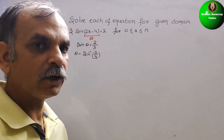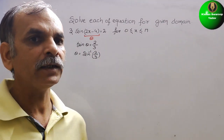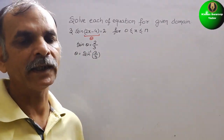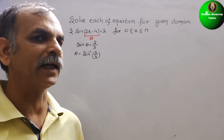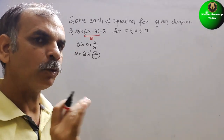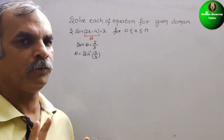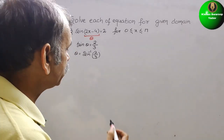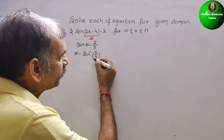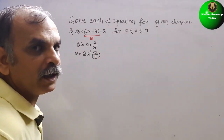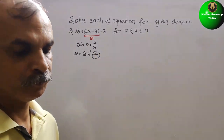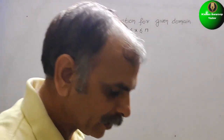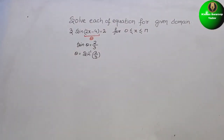2/3 is equal to 0.666... so we will take 2/3. We can solve this with the help of a scientific calculator.